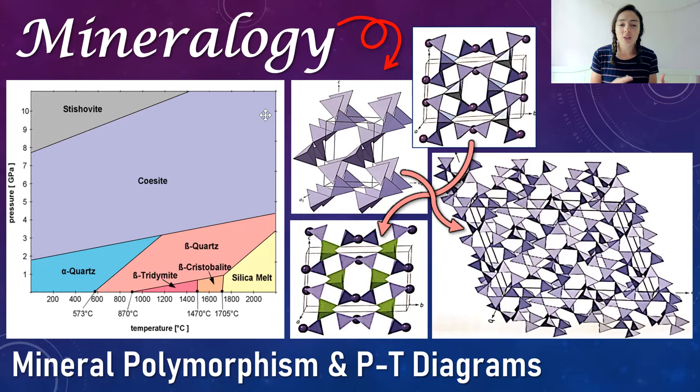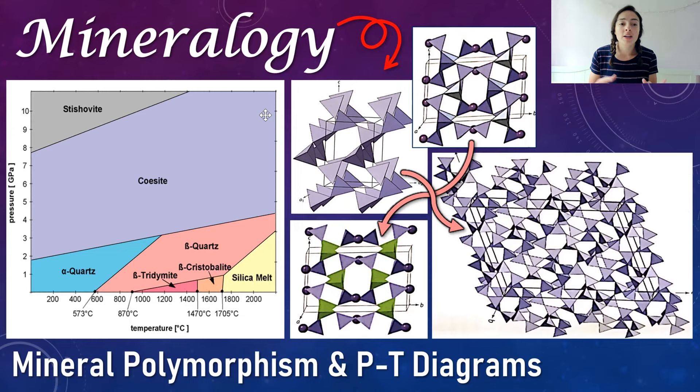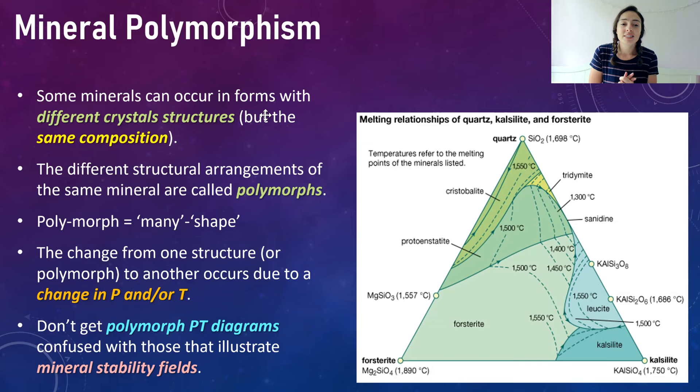In this video I'm going to explain what common minerals have polymorphs and where those polymorphs lie on pressure-temperature diagrams — their stability fields — and we'll talk about what trends we see in high-temperature polymorphs versus low, and high-pressure polymorphs versus high. That can help you remember the differences in their structure correlating with differences in their stability. Let's get started.